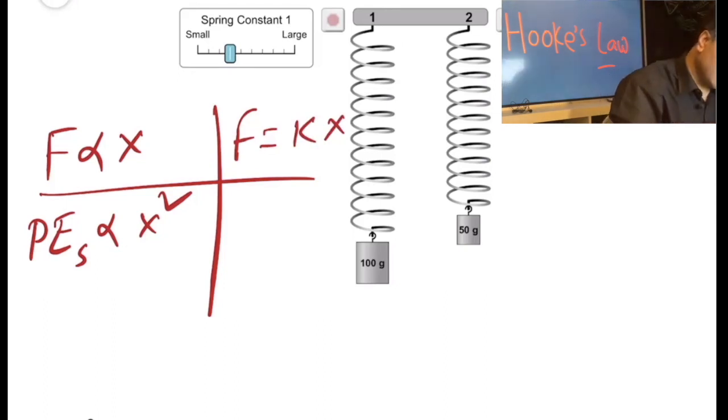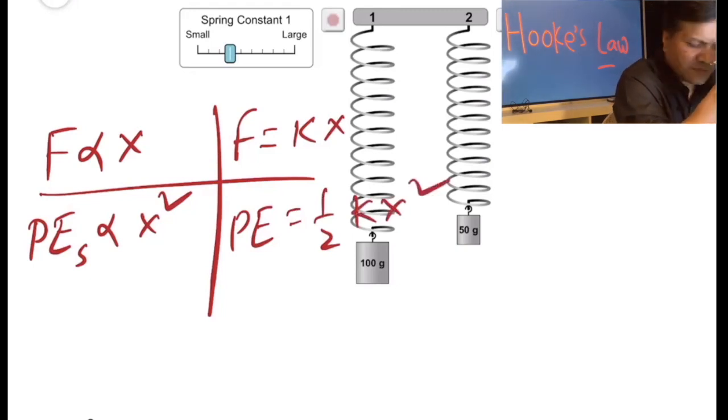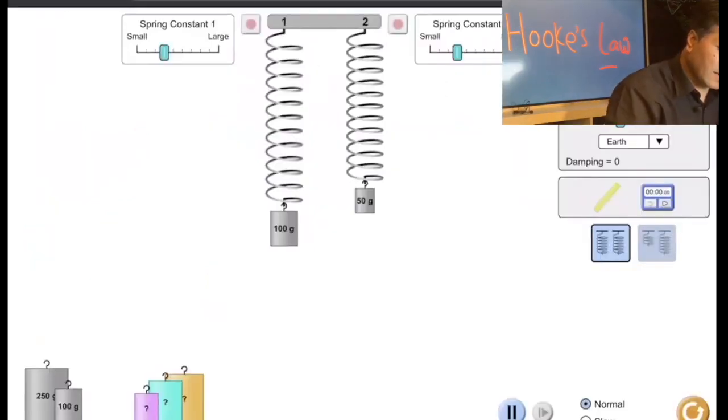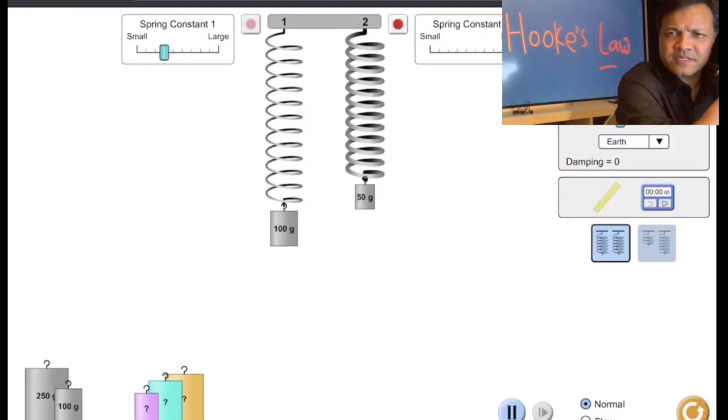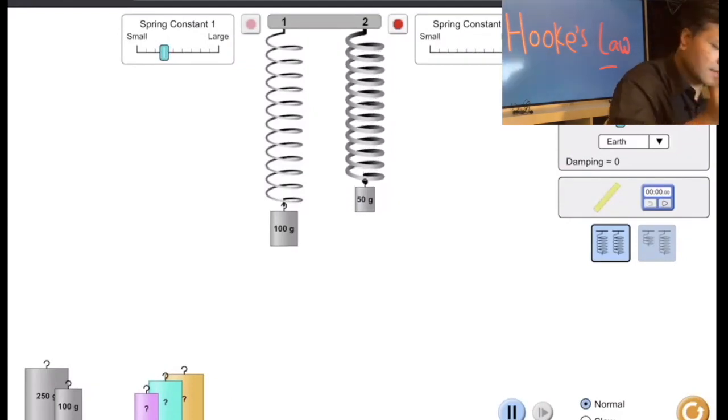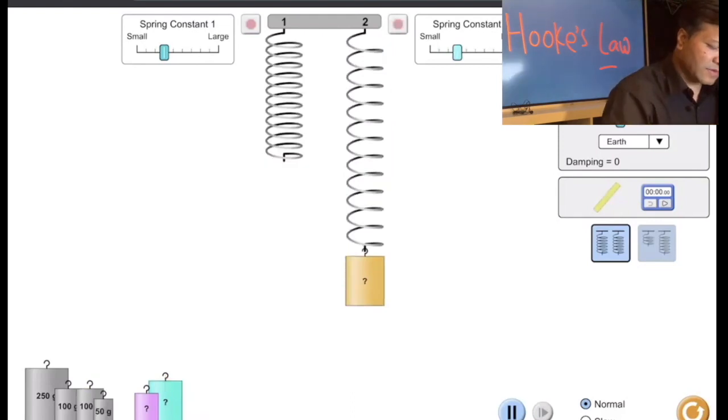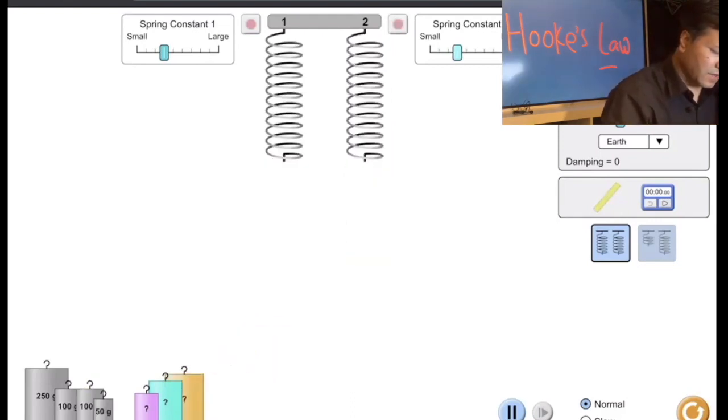K is the Hooke's constant or the steepness of a spring, and PE is actually half KX squared. K is the steepness of a spring. For example, this spring now has a bigger K than the spring on the other side. Now let's get started. This lab's goal is to find the mass of the orange.